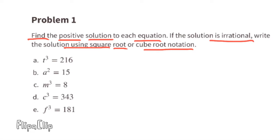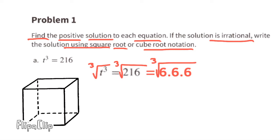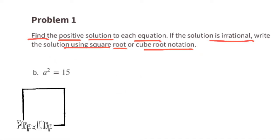Part a: t cubed equals 216. The cube root of 216 is 6 because 6 cubed is 216. That means that the three dimensions of this cube — the height, the length, and the width — would all be 6 units.